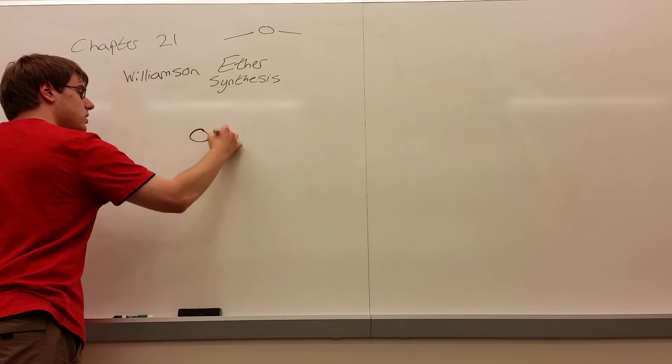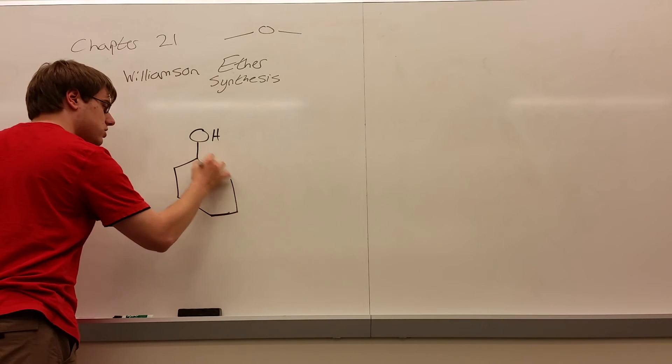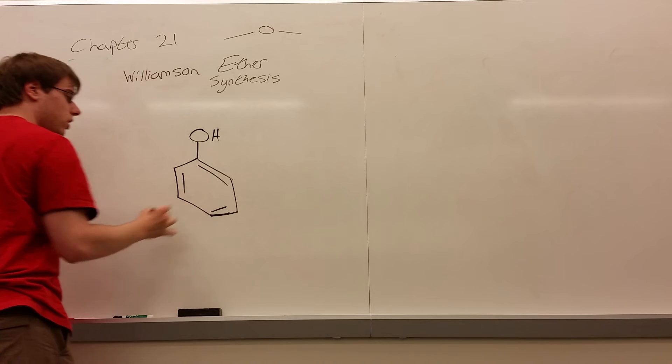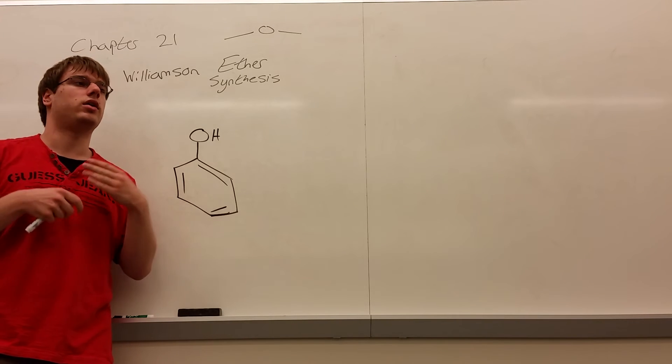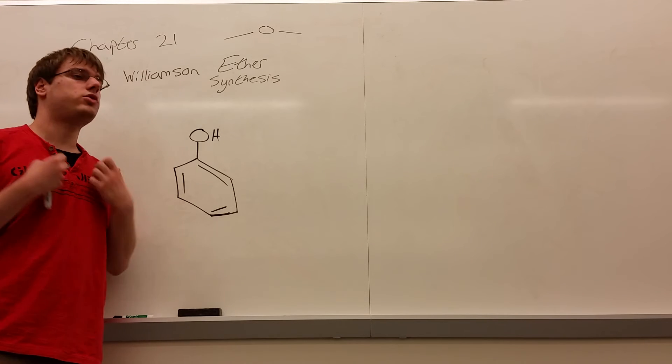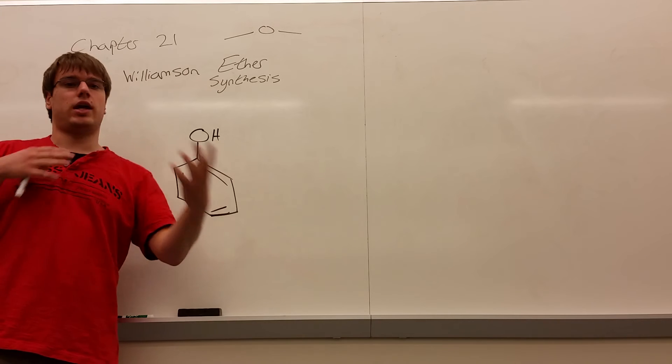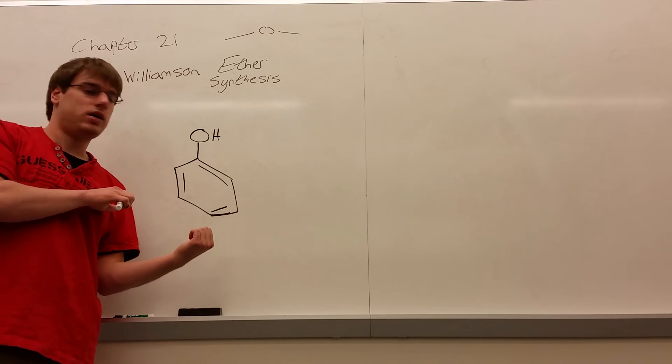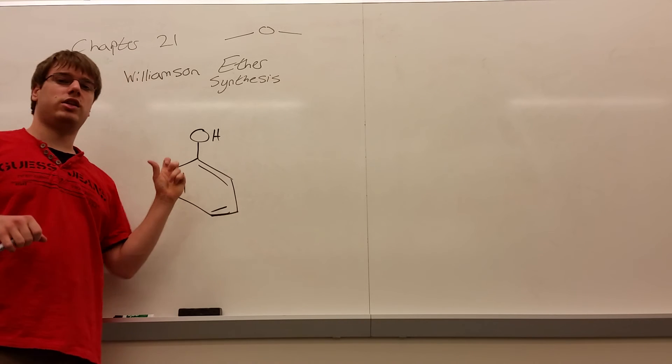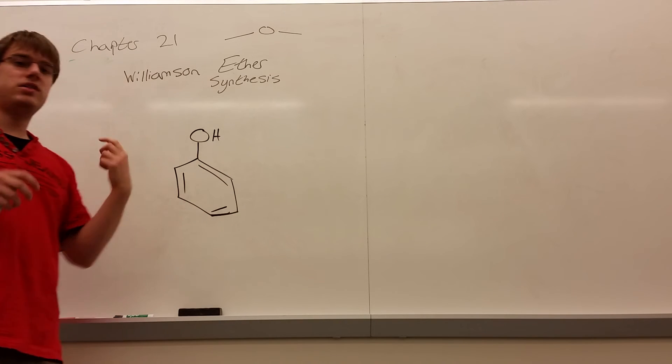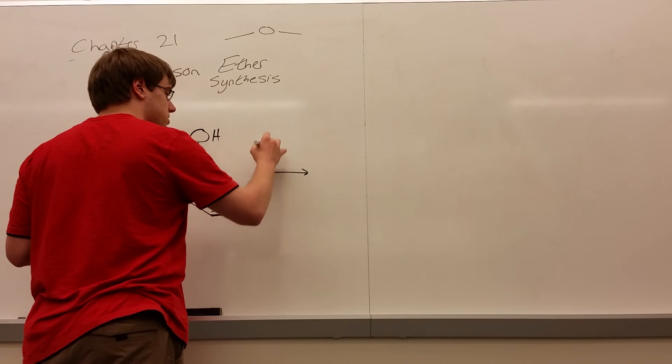So how do we make ethers in the context of phenols? So we have OH, we have our benzene. How can I make an ether with this? Well, one thing to keep in mind is a concept we taught for the first exam, just how stable benzene is. It's an aromatic ring, which means in general it doesn't like to lose its aromaticity.